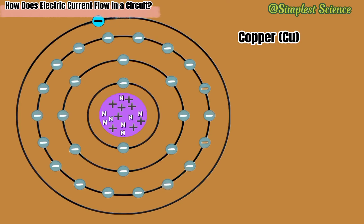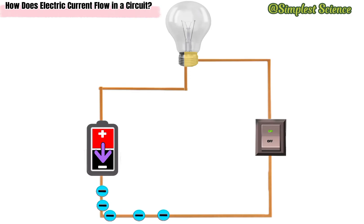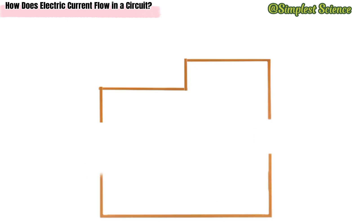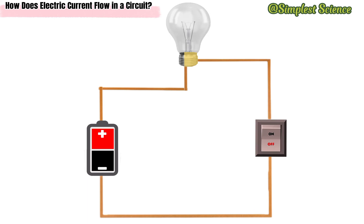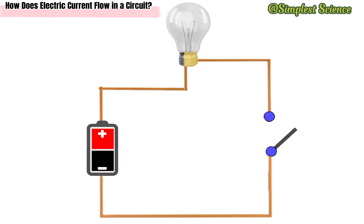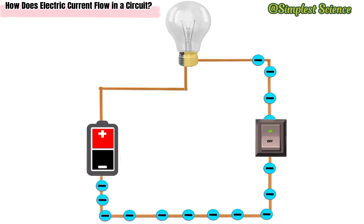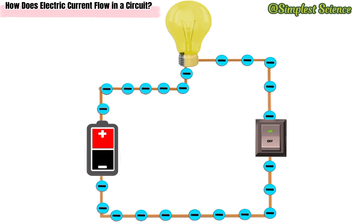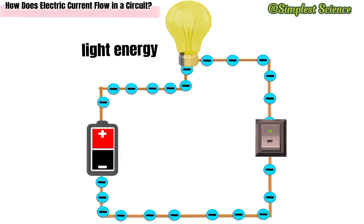To summarize, electric current is produced when the free electrons in the atom of a metal wire start to flow. When applied with voltage through an energy source, this conductive medium — aside from being the source of electrons — also links the rest of the components, forming the continuous path. The flow of current is then controlled by a switch by turning it on or off, resulting in the closing or opening of the circuit. Through a continuous current flow, it will then reach the load where the electrical energy will be converted to another form of energy — in this case, to light energy.